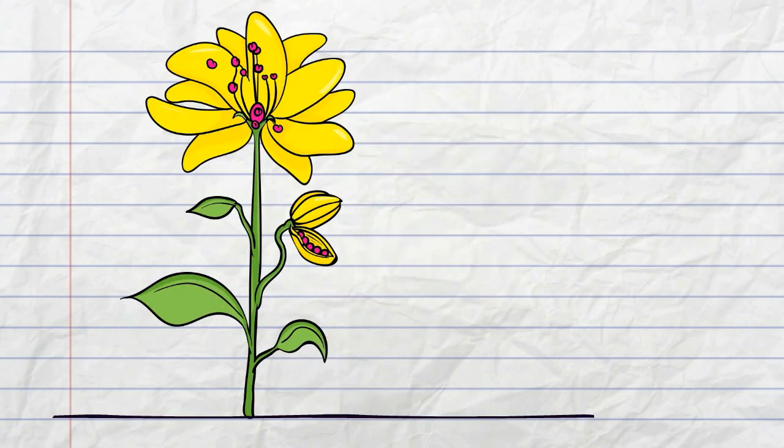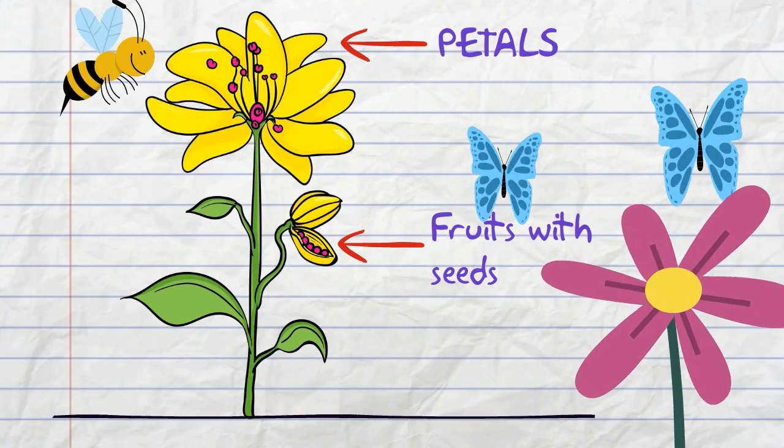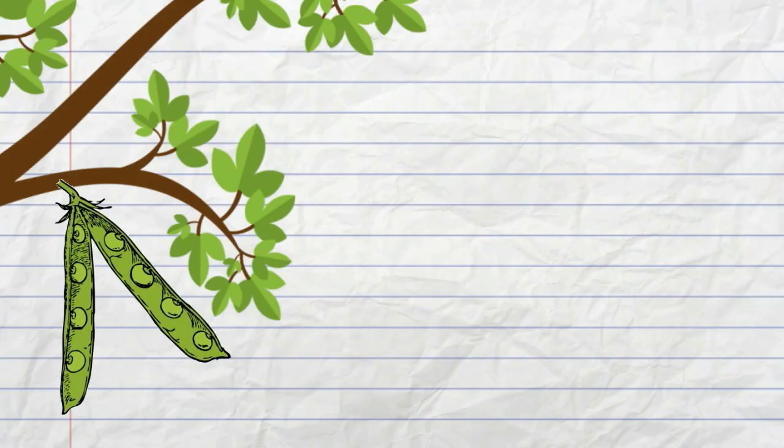When that happens, the flower will develop into fruits with seeds. The petals on the flower are usually brightly colored to attract insects to help pollination. The fruit protects the seed inside.